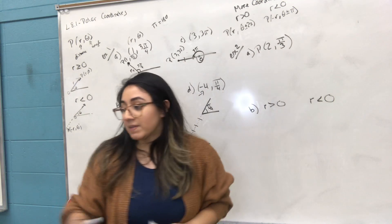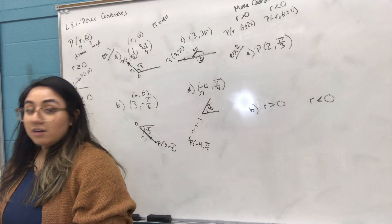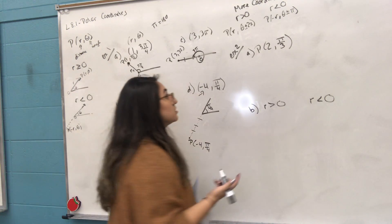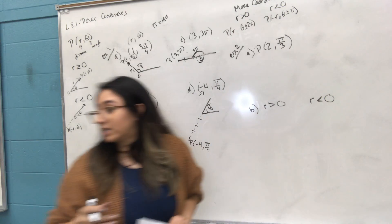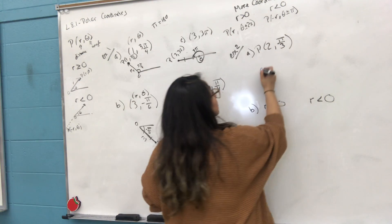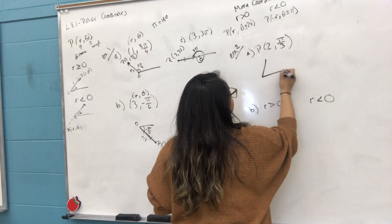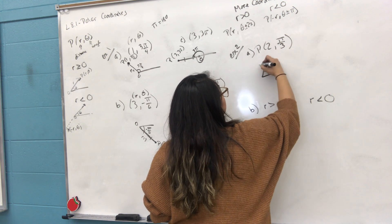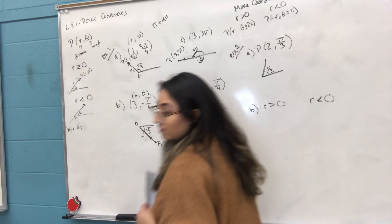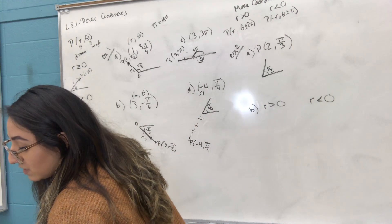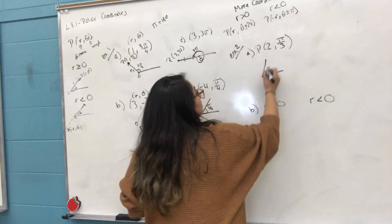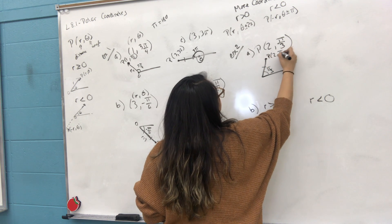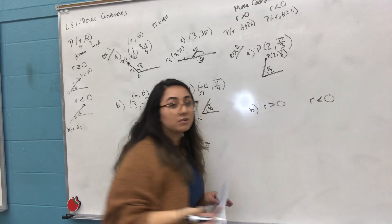Example two, part A: we have (2, π/3). π/3 is 60 degrees, so the angle looks like this. Then the radius is 2, so divide the line into 2 parts. Your polar coordinate P is (2, π/3). That's how you graph it — very simple.